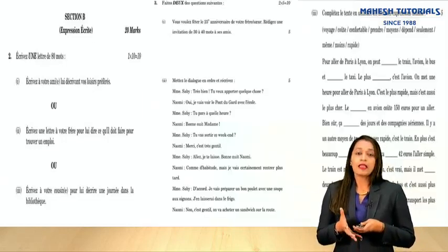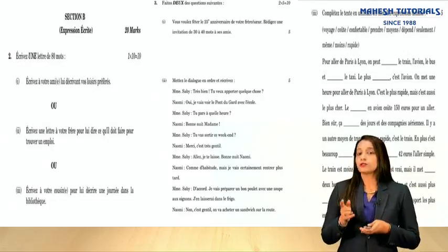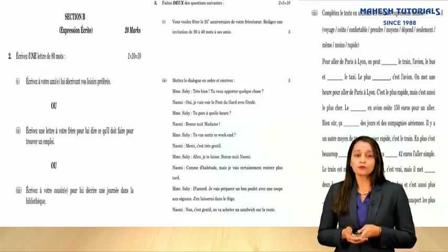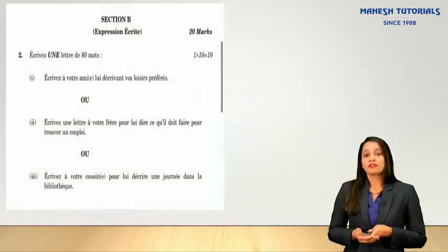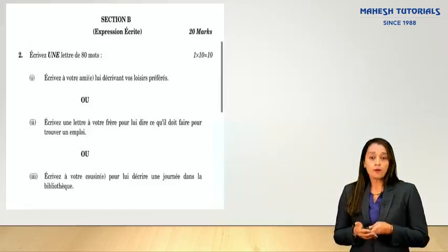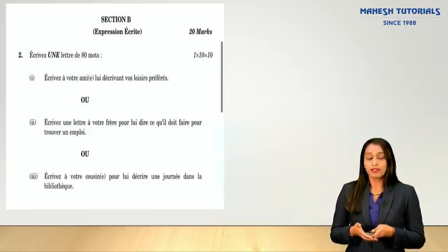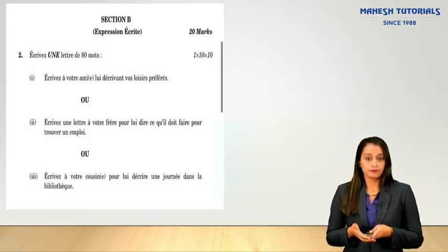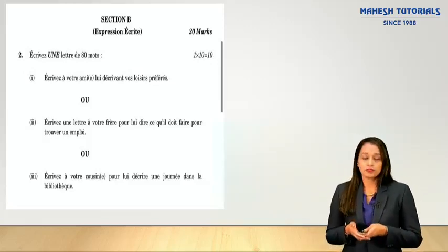In Section B, the first question is letter writing. Three options are given, out of which you attempt one. The second question has three internal options and you attempt any two topics among message writing, putting dialogues in order, and completing the paragraph. The letter writing topics are based on your Entre Jeunes textbook chapters. It is purely an informal letter — no formal letter will be asked.